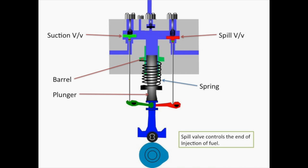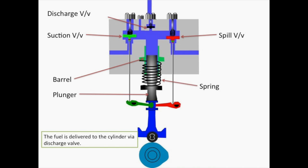A spill valve controls the end of the fuel injection. A discharge valve delivers the fuel to the fuel injector at high pressure.